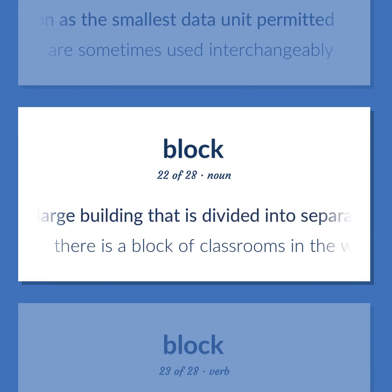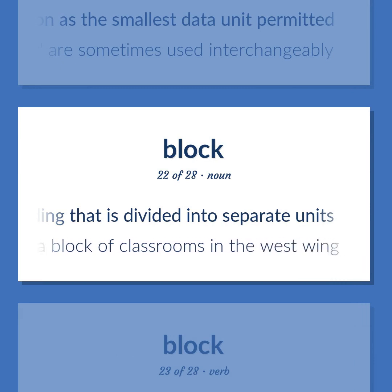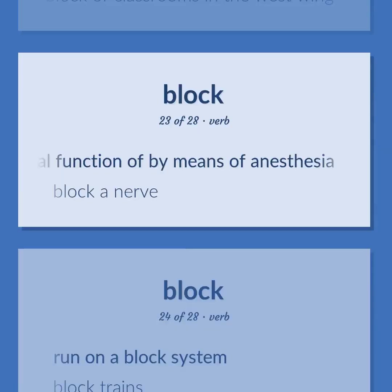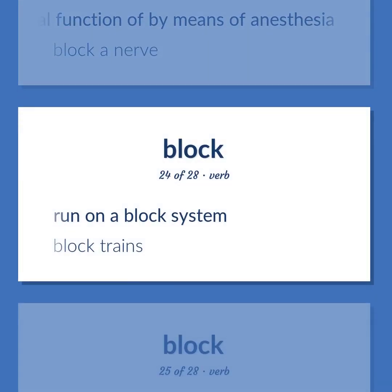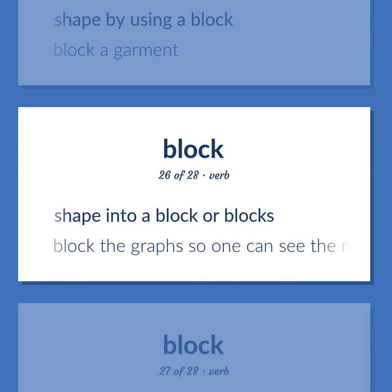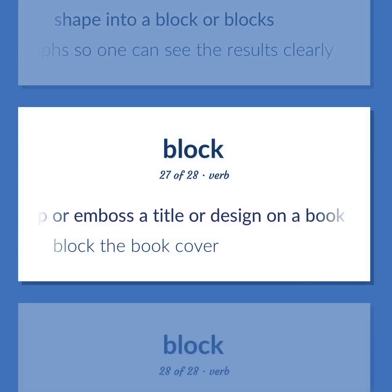Housing in a large building that is divided into separate units. There is a block of classrooms in the west wing. Interrupt the normal function of by means of anesthesia. Block a nerve. Run on a block system. Block trains. Shape by using a block. Block a garment. Shape into a block or blocks. Block the graphs so one can see the results clearly. Stamp or emboss a title or design on a book with a block. Block the book cover.